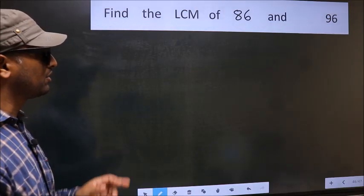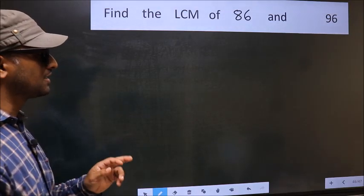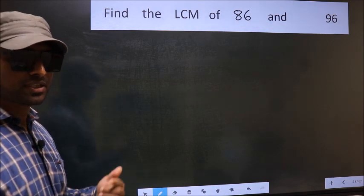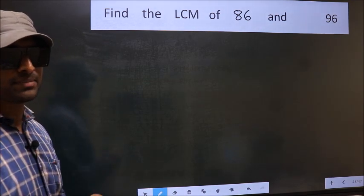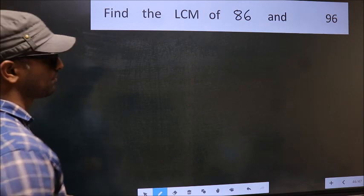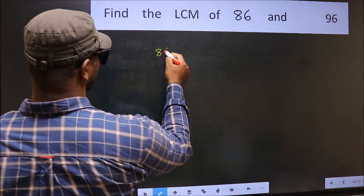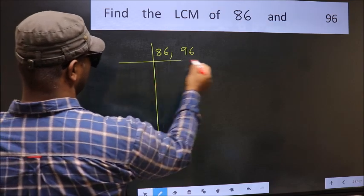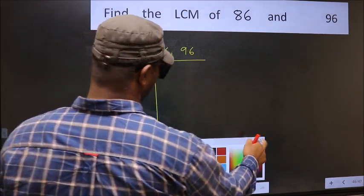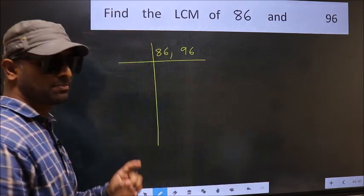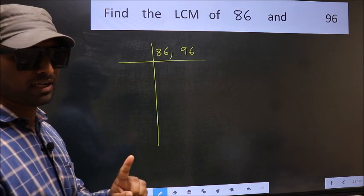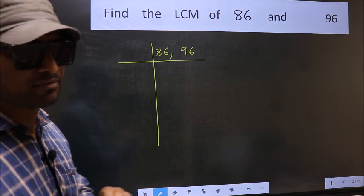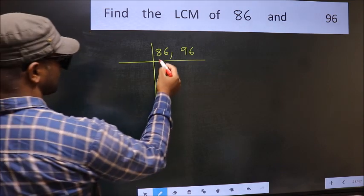Find the LCM of 86 and 96. To find the LCM, we frame it this way: 86 and 96. This is Step 1. Now you should focus on the first number, which is 86.